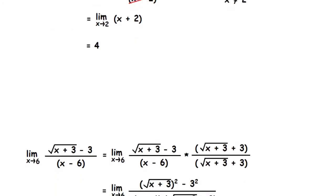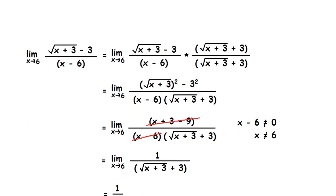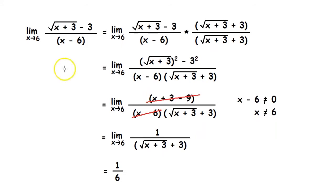The final method that we are going to learn today is by using the conjugate. Let's take this example. Here we are asked to find the limit of √(x + 3) - 3 divided by x - 6 as x tends to 6. By direct substitution we get 0 divided by 0. So we try another method.